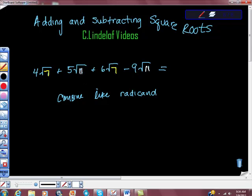So how many square roots of 7 do we have? We have 4 of them here, we have 6 of them here. For a total of 10 square roots of 7. Plus how many square roots of 11 do we have? We have 5 of them here, we have negative 9 of them here, so we have negative 4 square roots of 11. All right?